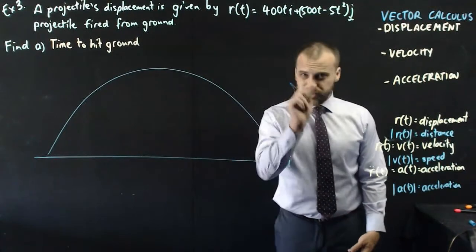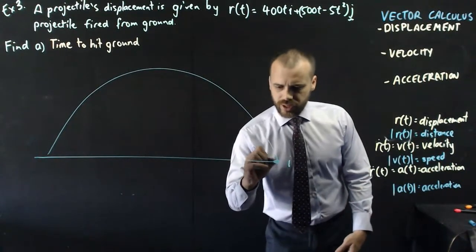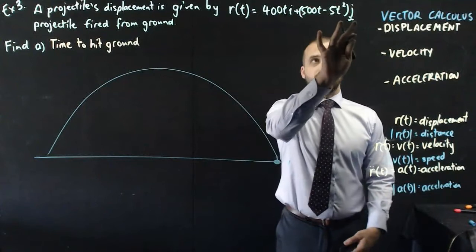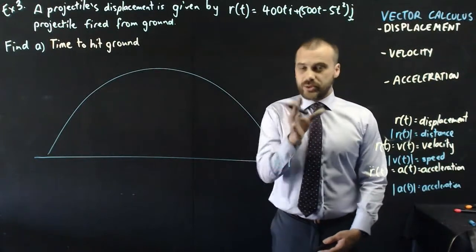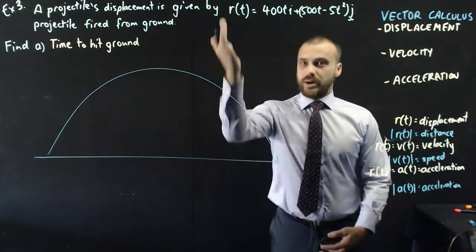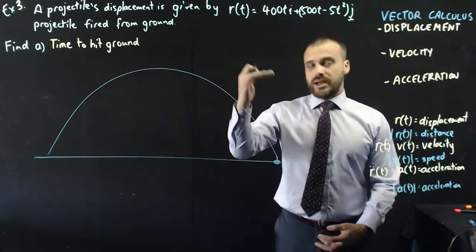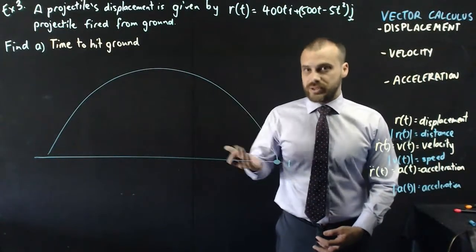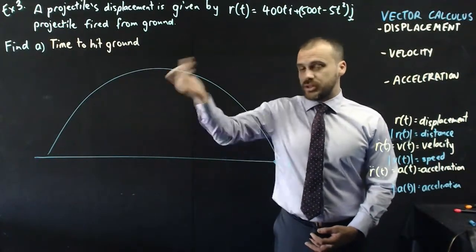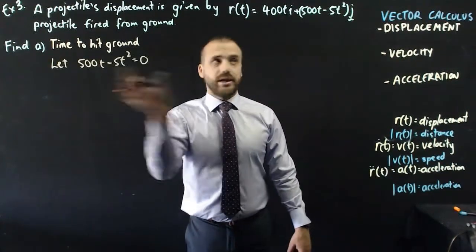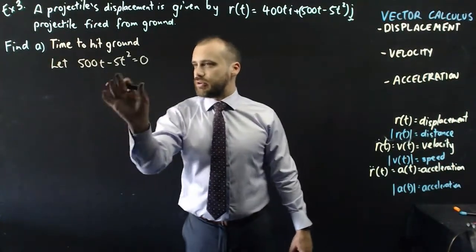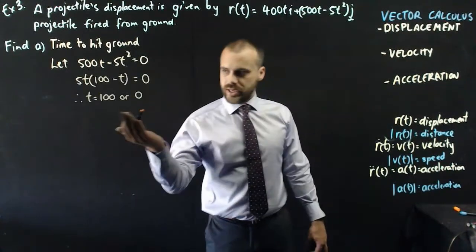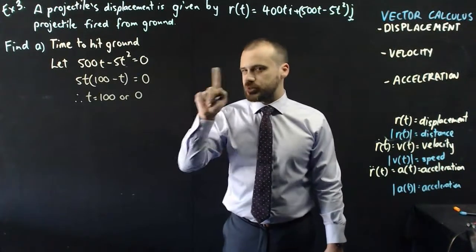All right, and you can see that its j component is described by a parabola, whereas its i component is just steadily moving forward at 400 meters per second. All right, so we're going to go through four different things. First off, we want to know the time it takes for this thing to hit the ground. Now, when it hits the ground, what do you know for sure? Well, if it's hitting the ground, you know its j component is equal to zero, right? It's not up in the sky. It's on the ground, and our j component there would be zero.